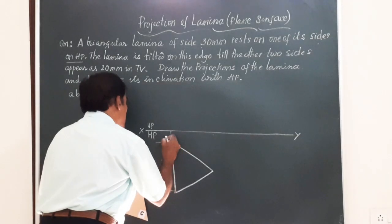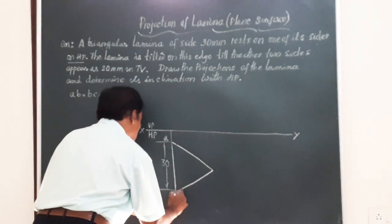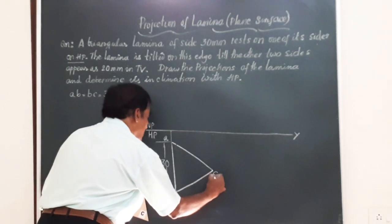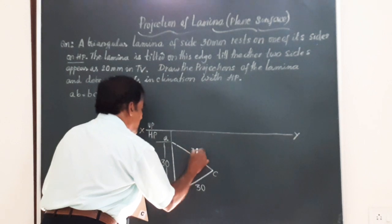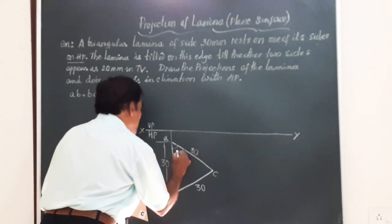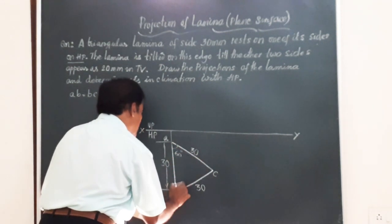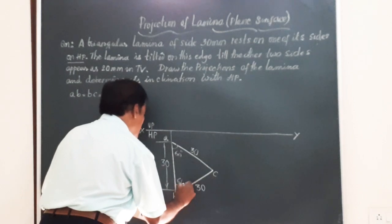I just number this as ABC: A, B, and C. And all these sides are measuring 30 mm, 30 mm. And this angle is going to be 60 degrees for all sides: 60, 60, 60.